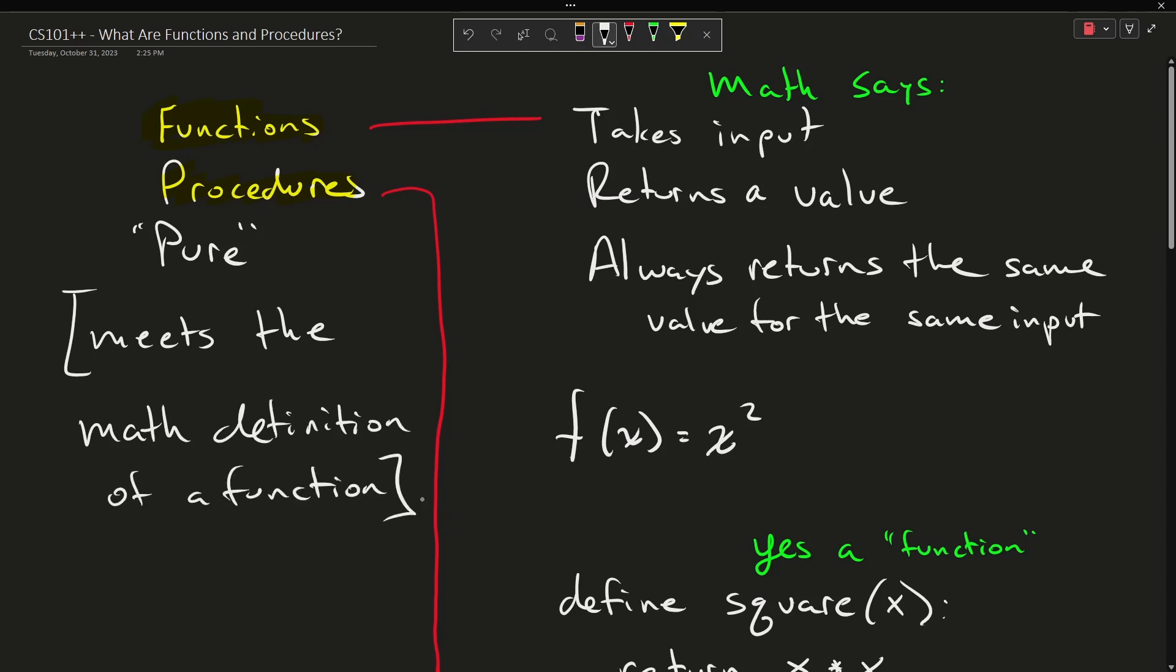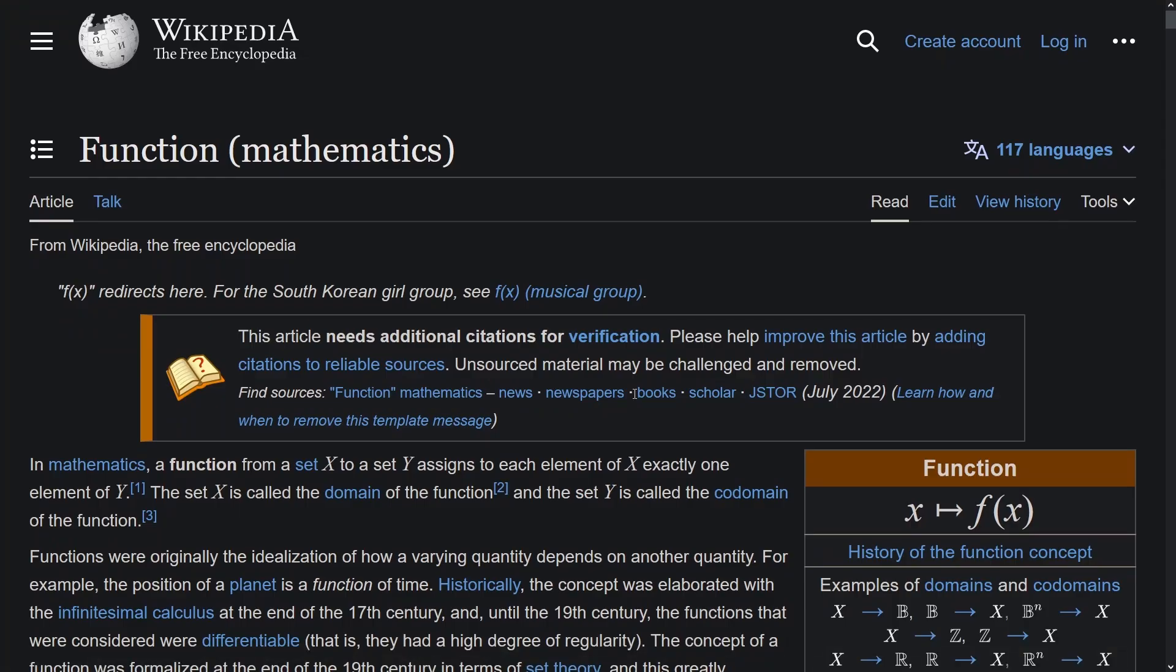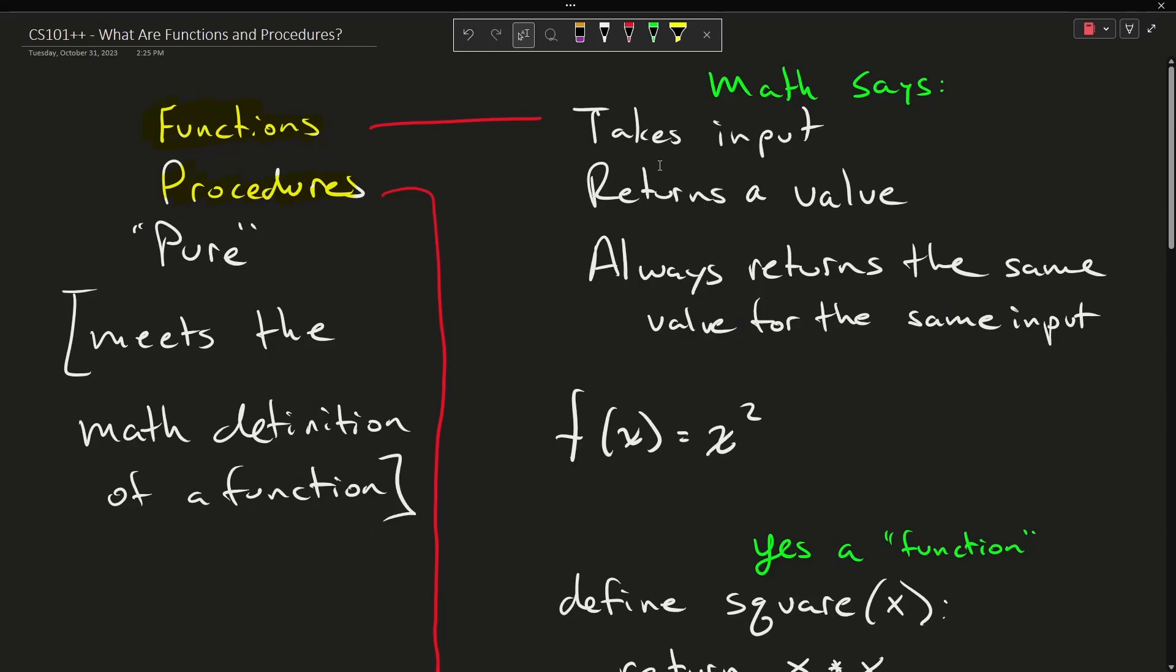Now the key problem here is that a strict definition of function from mathematics means that you have one input to one output. So this is supposed to actually read one to one, one input to one output. Except in the computer science world, we might say it is a pure function if it meets the math definition of being a function.